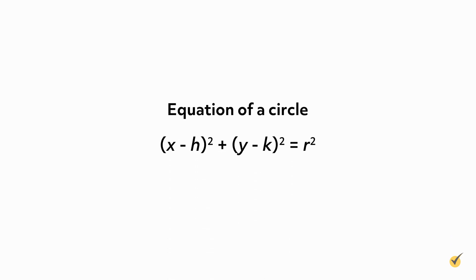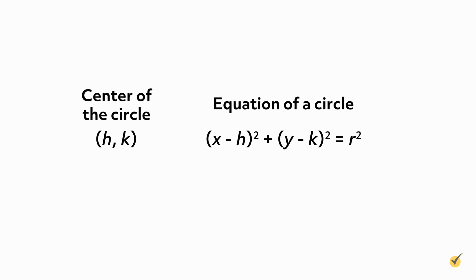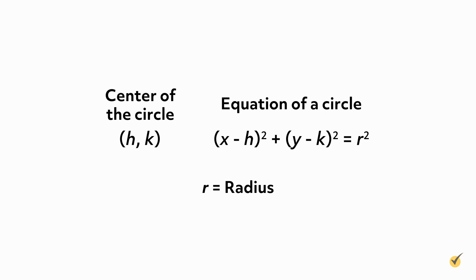Let's start by looking at the equation of a circle: x minus h squared plus y minus k squared equals r squared. Wow, that's a lot of variables. The x and the y are pretty standard, but the others might not be familiar. The h and the k together make the center of the circle at the point (h, k). The r is the radius of the circle.